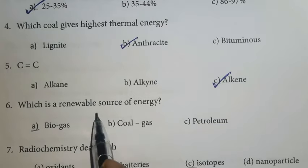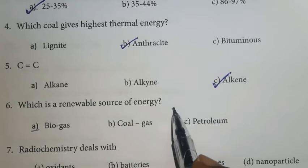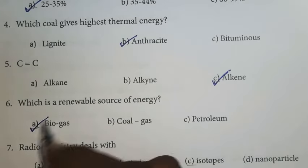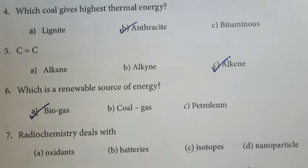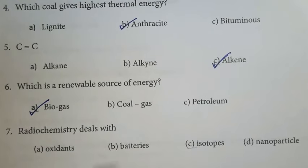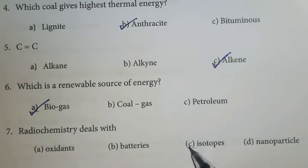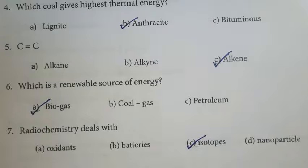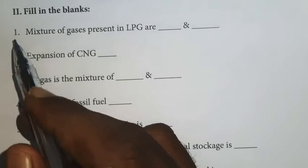Sixth one: which is a renewable source of energy? Option A is the right answer — biogas. Seventh one: radiochemistry deals with isotopes. Option C is the right answer. Second part: fill in the blanks.